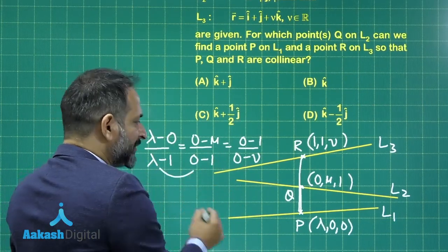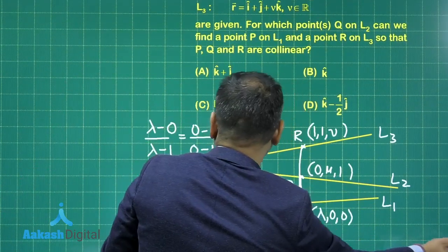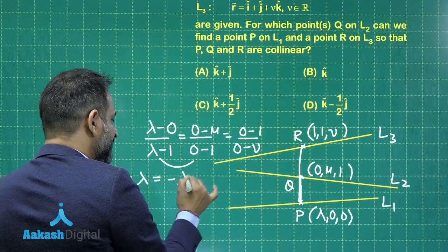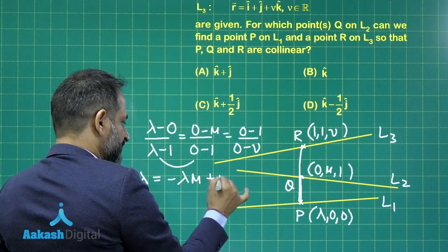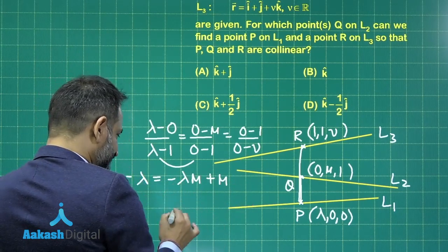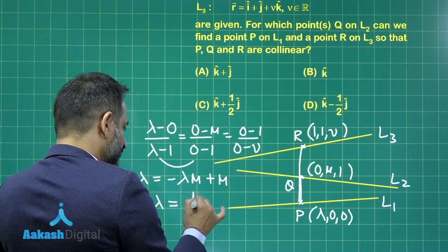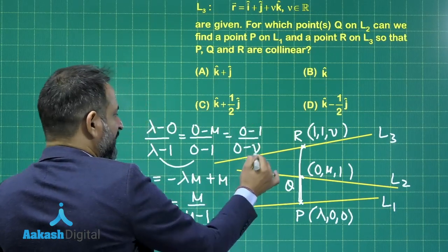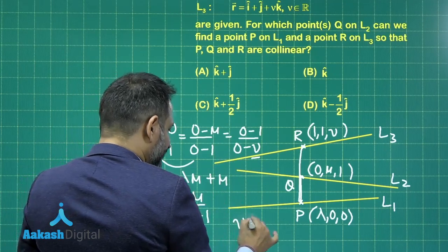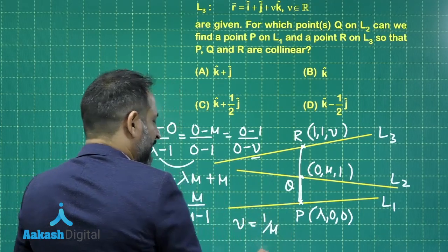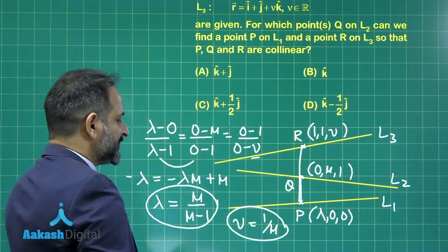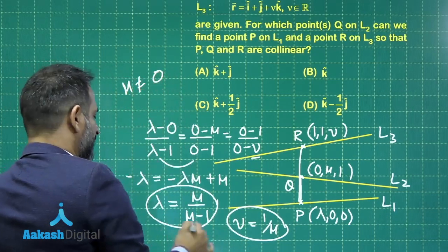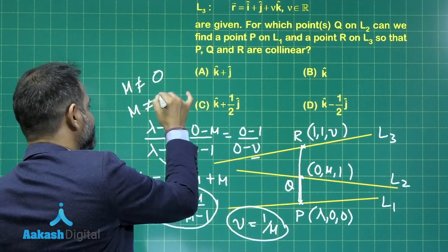From here, we can calculate the values of λ, μ, and ν — though we cannot get all values independently. Checking the possibilities: calculating μ, we get minus λ equals minus λμ plus μ. So λ equals μ/(μ minus 1), and calculating ν in terms of μ, we have ν equal to 1/μ.